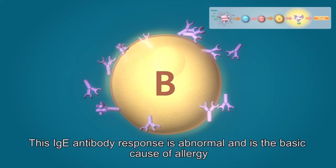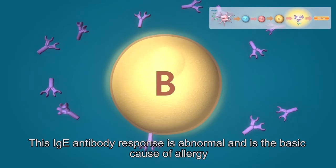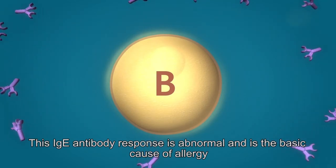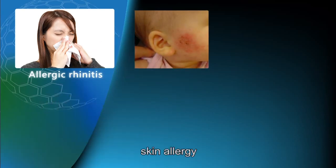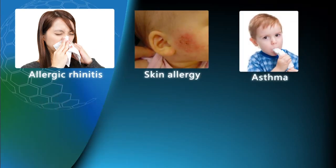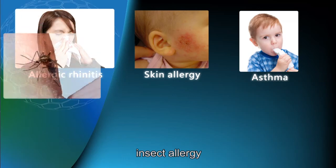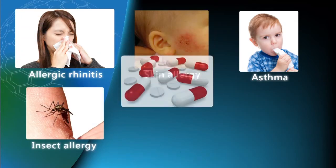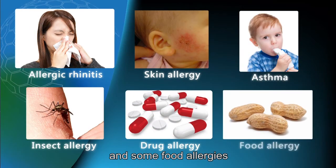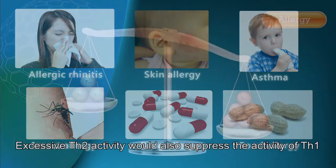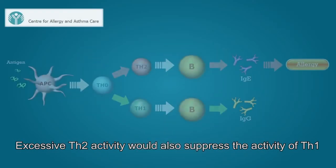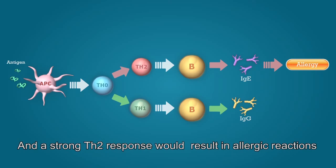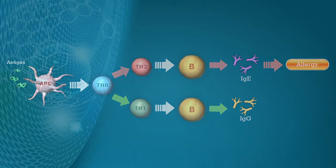This IgE antibody response is abnormal and is the basic cause of allergy. Diseases caused by IgE include allergic rhinitis, skin allergy, asthma, insect allergy, some drug allergies, and some food allergies. Excessive Th2 activity would also suppress the activity of Th1, and a strong Th2 response would result in allergic reactions.